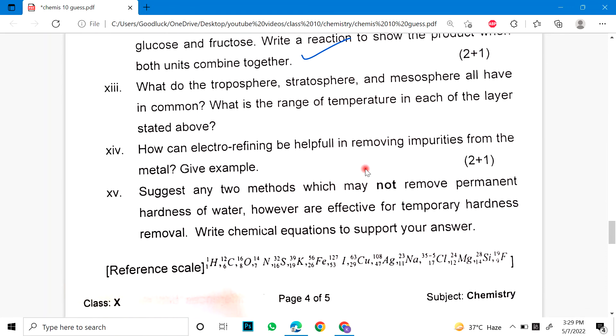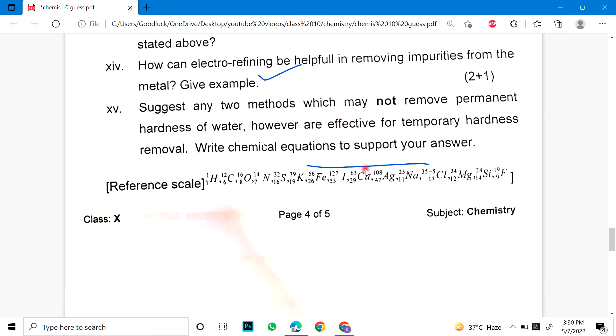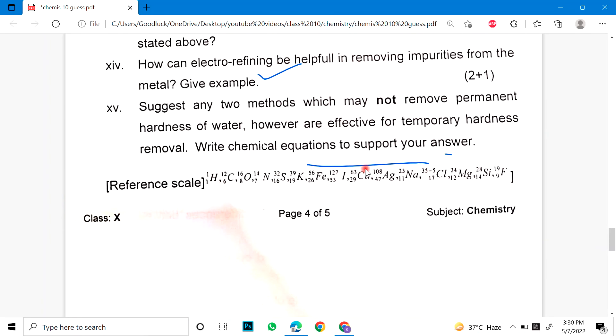Or what do the troposphere, stratosphere and mesosphere all have in common? What is the range of temperature in each of the layers stated above? Number 14. How can electro refining be helpful in improving impurities from the metal? Give one example. Number 15. Suggest any two methods which may not remove permanent hardness of water. However, are effective for temporary hardness of removal. Write chemical equations to support your answer. And you have to give this atomic number and atomic mass.